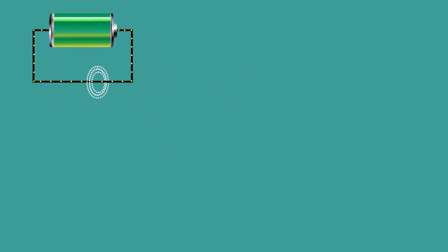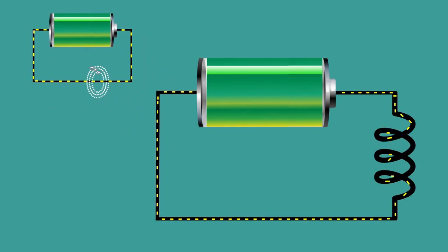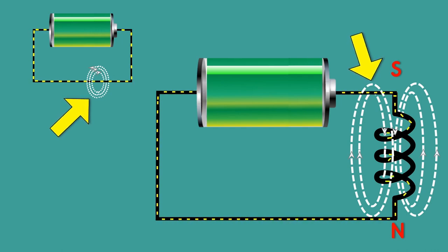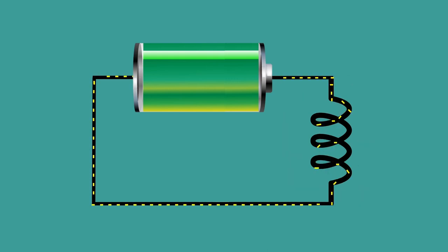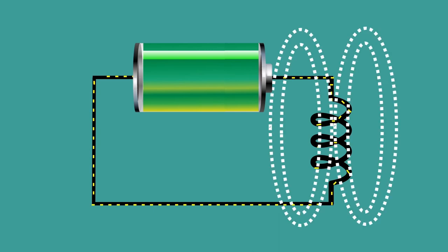Bending a conductor into multiple closely spaced loops to form a coil enhances this effect. The strength of the magnetic field is proportional to the current flowing in the conductor. If the current is increased, the magnetic field strength is also increased.